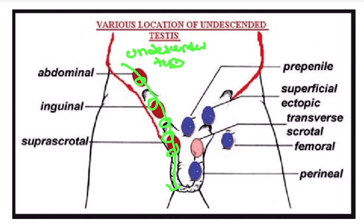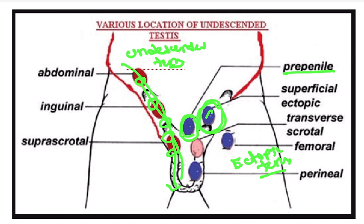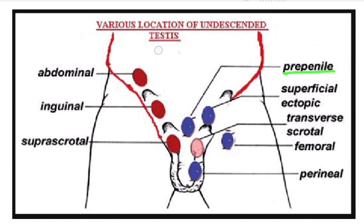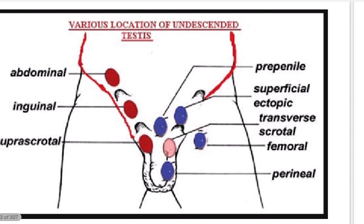But if the testis forgets its pathway and goes outside this normal pathway, then it is called the ectopic testis. Ectopic testis means the testis is not present in the normal descending pathway. Examples of ectopic locations include: the pre-penile space, the superficial inguinal area, transverse scrotal, femoral area, and perineal — none of which are the normal pathway of the testis.